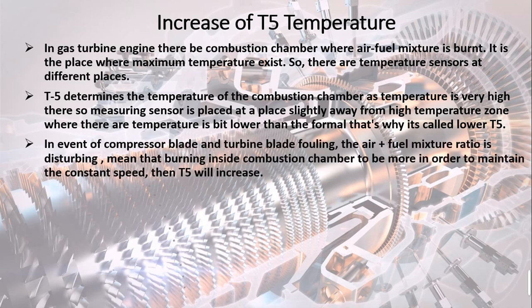In the event of compressor blade and turbine blade fouling, the air-fuel mixture ratio is disturbed, meaning that burning inside the combustion chamber must be more intense in order to maintain constant speed, and then T5 will increase.